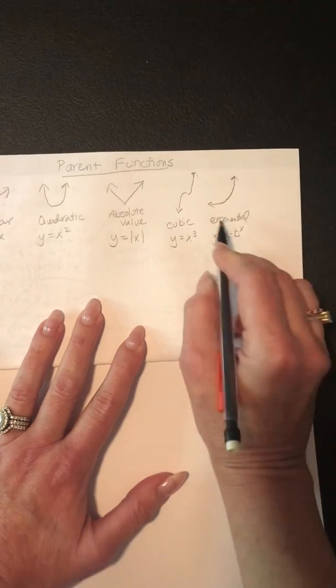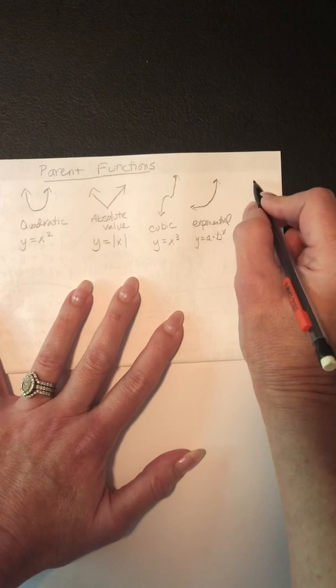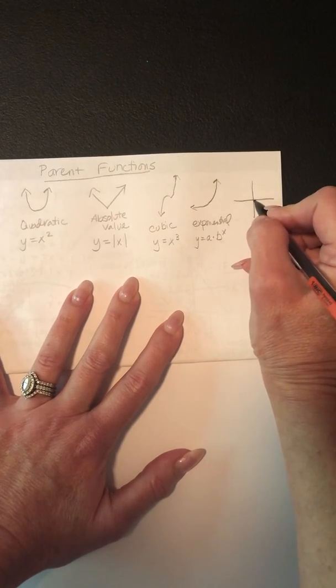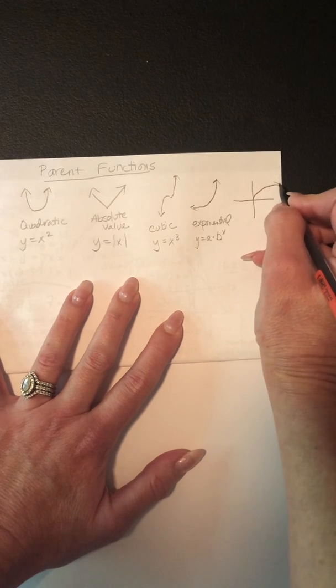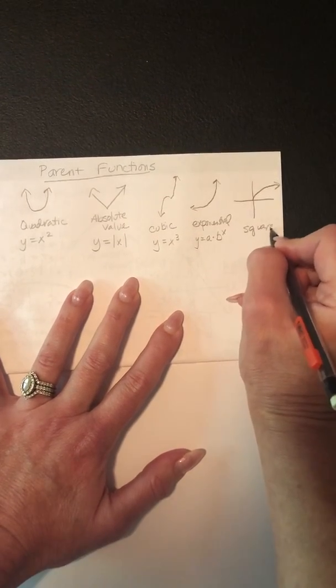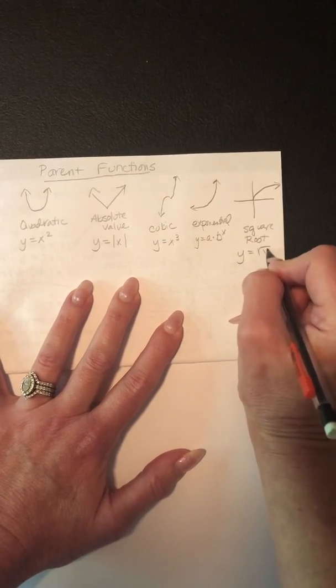And in exponential, the exponent is always the variable. And then the last one is the square root. I'll go ahead and draw it like that. And the square root one goes like that. And that is y equals the absolute value of x.